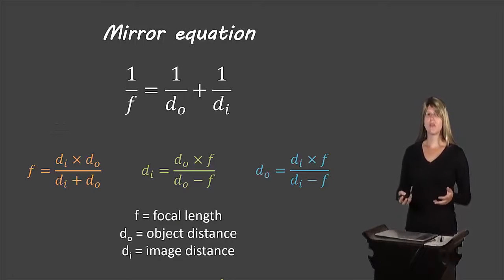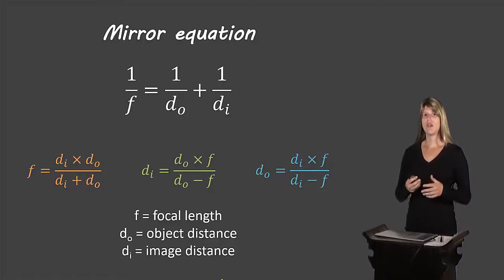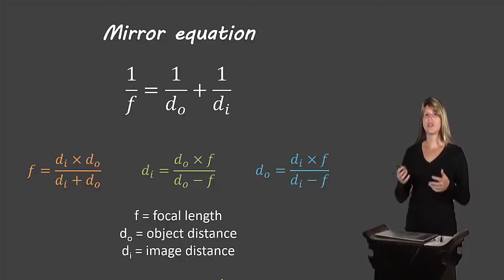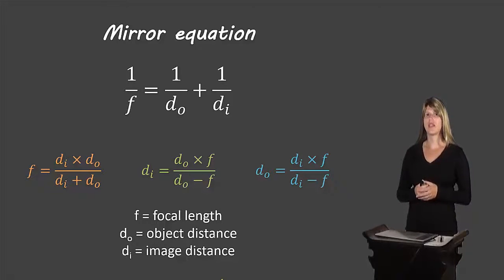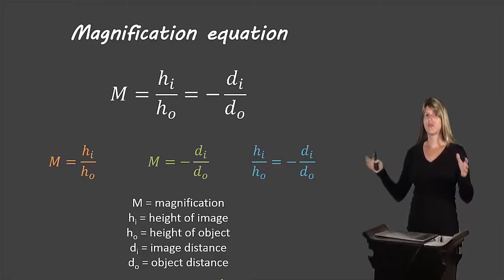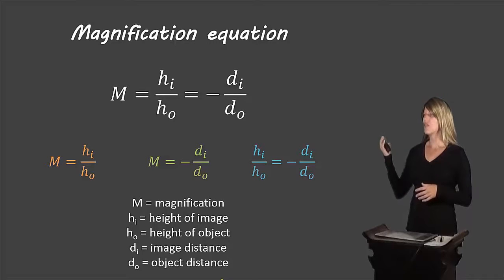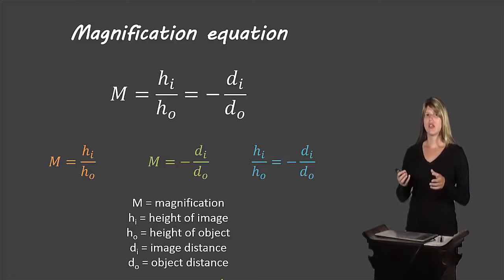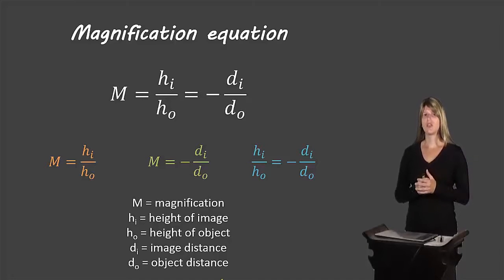Let's do a quick review. This is our mirror equation — in white it shows the original formula, and the equations below show different versions with each individual variable isolated so we can use them to solve problems. And here's our magnification equation: in white is the full format, and then the orange, green, and blue equations show the different pieces that can be used in isolation.